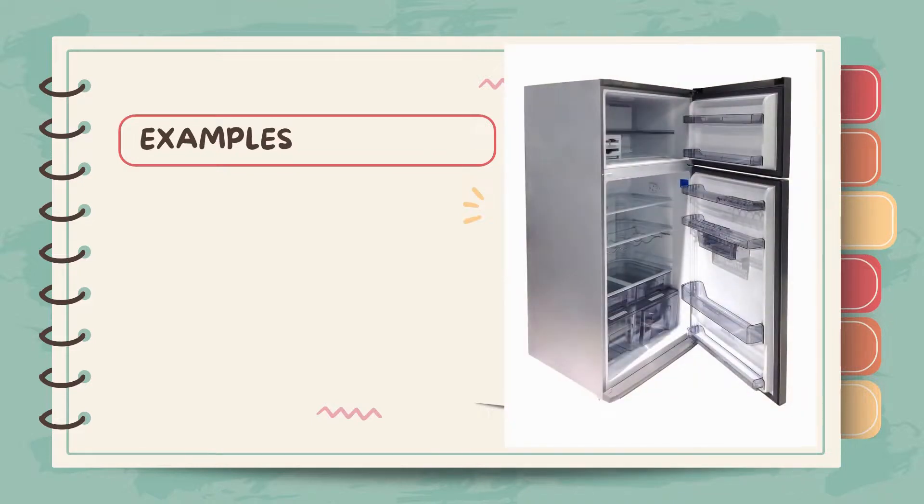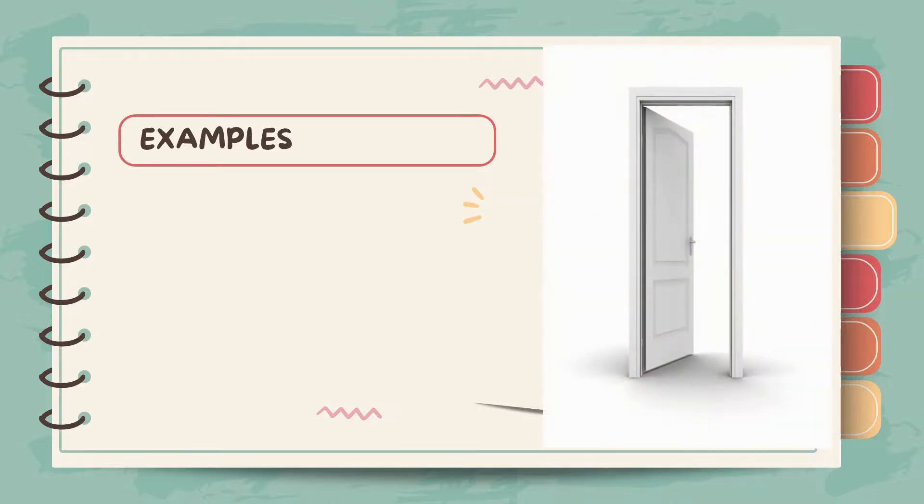Another example is refrigerator. A refrigerator has a unit of cubic feet. Another is a door. A door also has a unit of measure cubic feet.